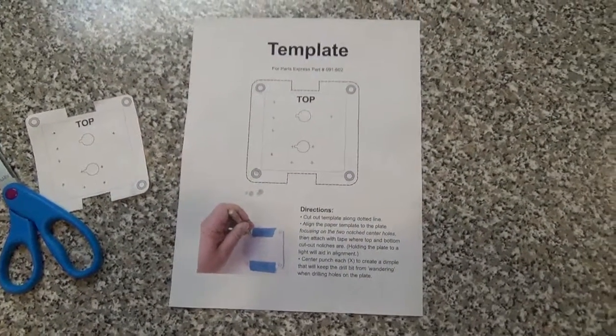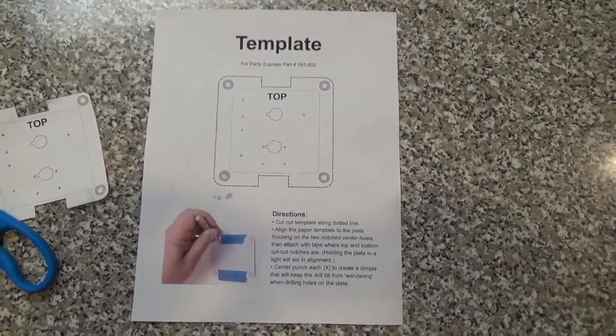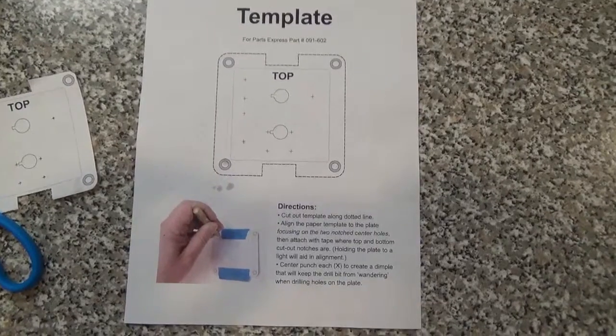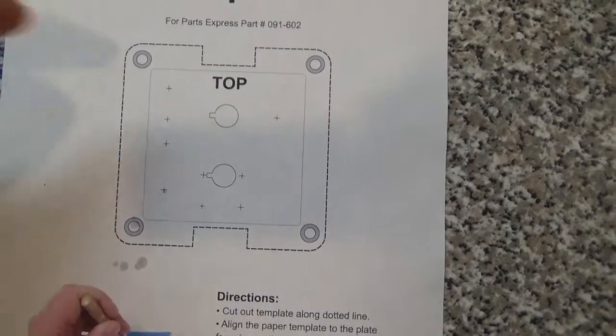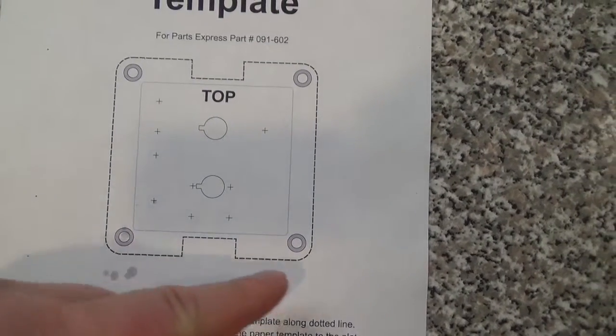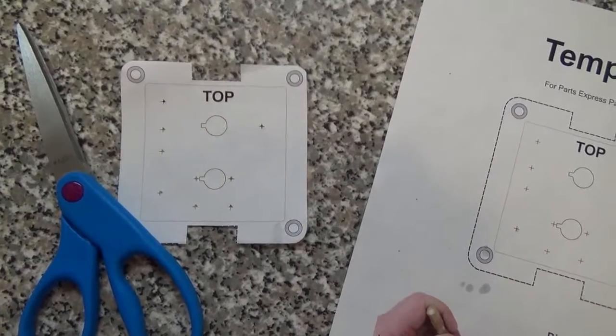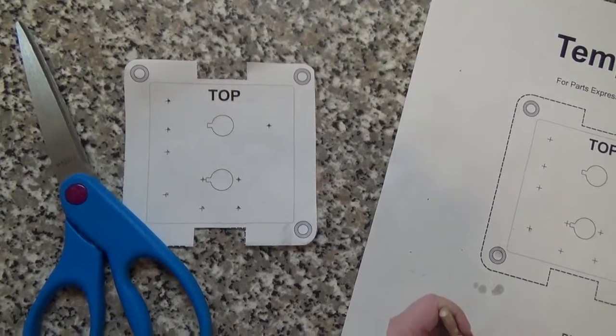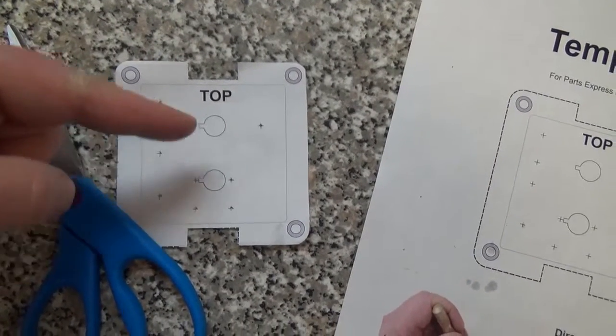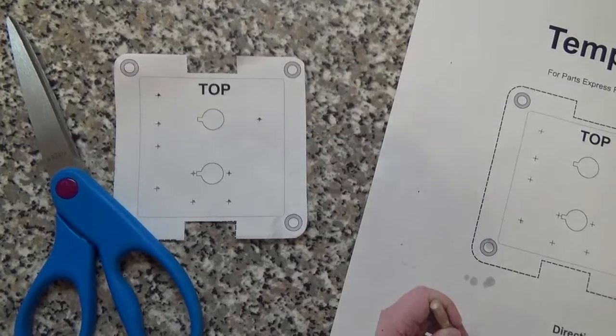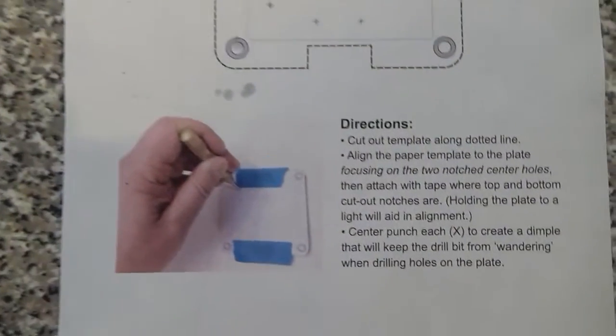The first part in designing the micro B 2.1 plate amplifier is to take the template page of the PDF. As you can see here, there's a dotted line. Just cut along the dotted line so you have something that looks like that. Hold that up to your metal binding post plate and everything will pretty much line up. These two holes will line up almost exactly.